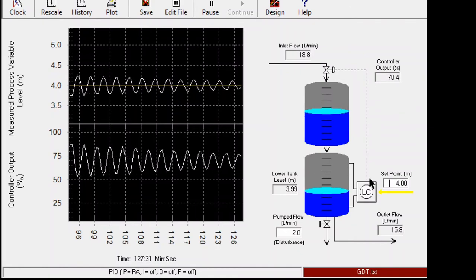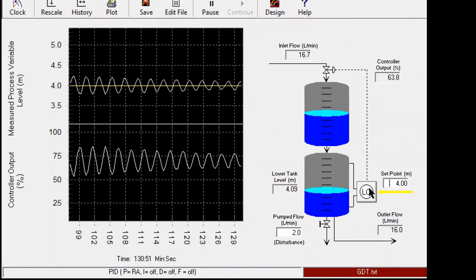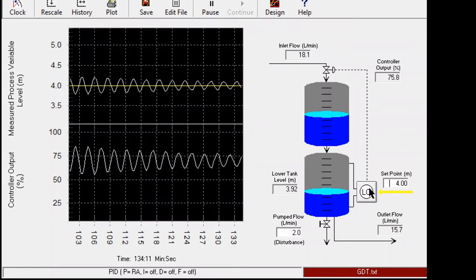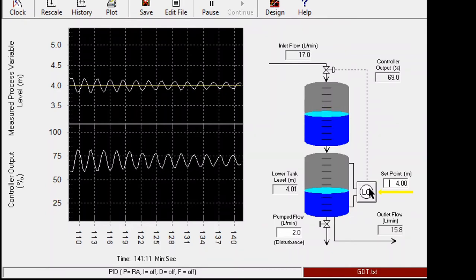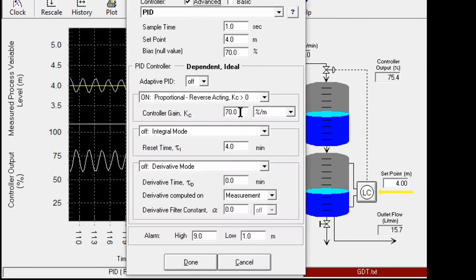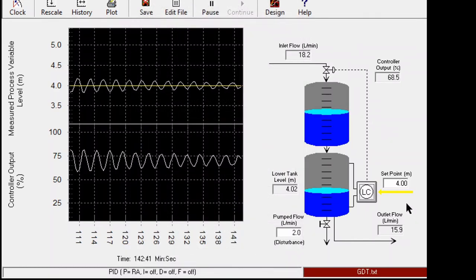The amplitude is slowly decreasing, so it shows that we are nearing close to the value of the ultimate gain. Let's see what happens when I make it a little bit more, say 72.